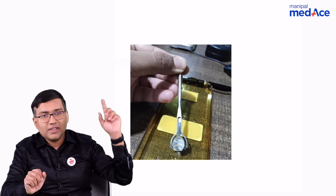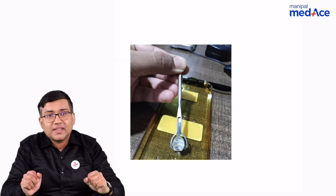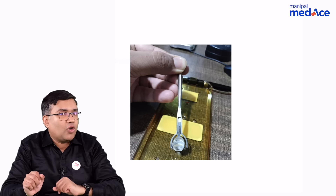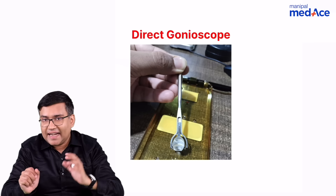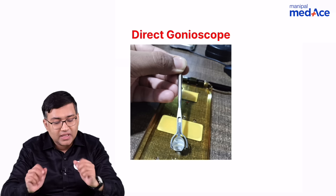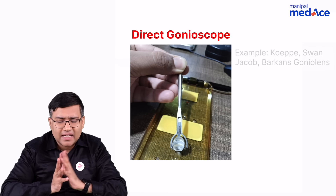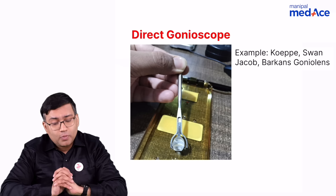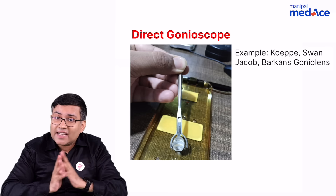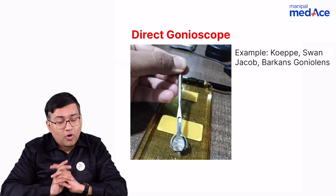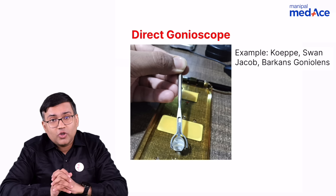Now, what are the various types of gonioscope? First, see this — this is called a direct gonioscope. Examples of direct gonioscopes are the KP gonioscope, Swann-Jakob gonioscope, or Birken's gonio lens.